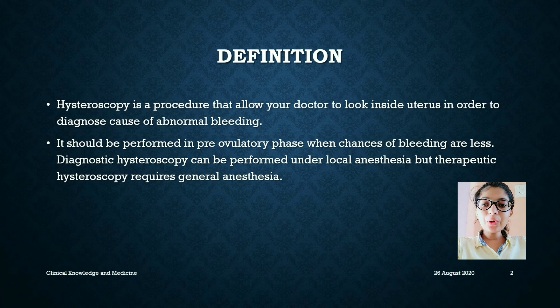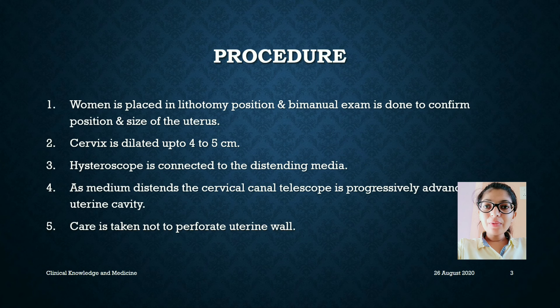Definition. Hysteroscopy is a procedure that allows your doctor to look inside the uterus in order to diagnose the cause of abnormal bleeding. It should be performed in the pre-ovulatory phase when chances of bleeding are less. Diagnostic hysteroscopy can be performed under local anesthesia, but therapeutic hysteroscopy requires general anesthesia.